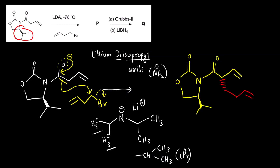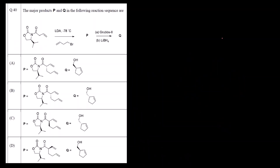So from this first product, this is P. From this product we can eliminate two options: one where the group is above the plane — that is incorrect — and another is also incorrect. One option has no stereochemistry mentioned, which is completely different. So options A and B are the correct options, and we now have to identify the Q product.